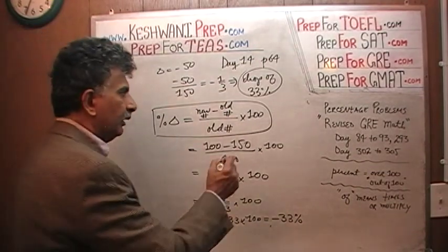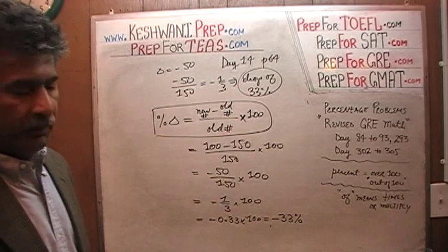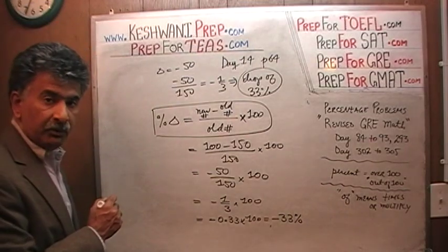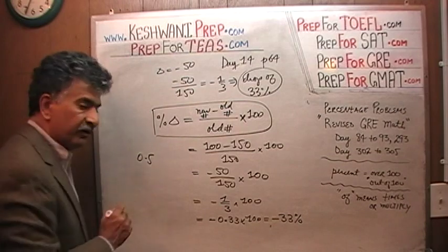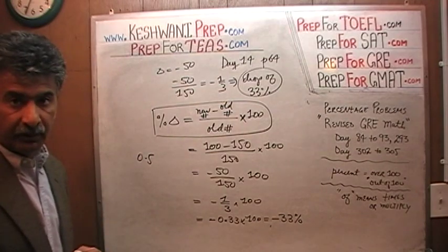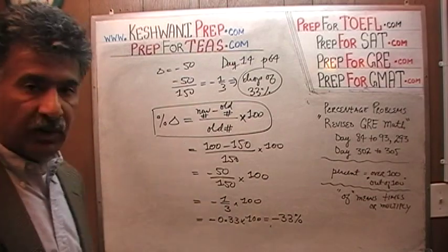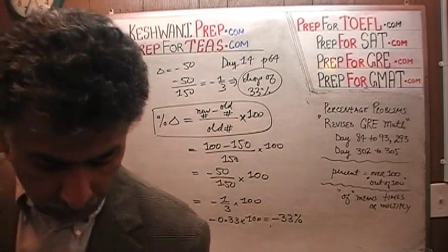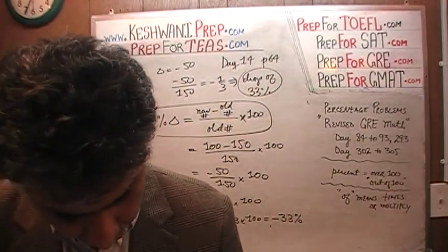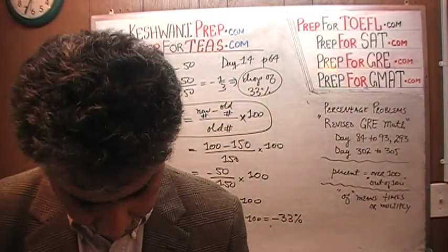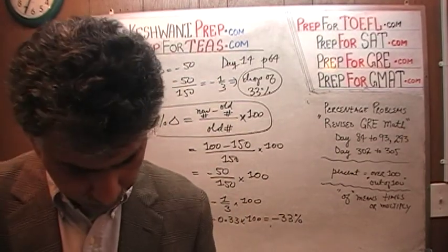We must remember to do times 100, otherwise we'll get a decimal answer. Of course, when doing a percentage calculation, if you end up with 0.5, that is 50% in context. That's the formula we'll use for the next few problems on that page. Now that we understand the basic concept, let's get going.